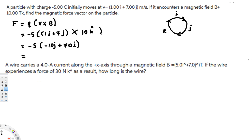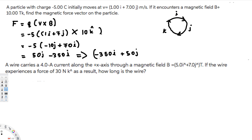Now let's multiply everything by negative 5. This gives us negative 5 times negative 10j equals positive 50j, and negative 5 times positive 70i equals negative 350i. Arranging in i, j, k format, the final answer is negative 350i plus 50j newtons.